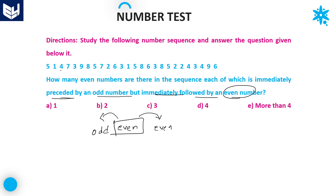Start with the first even number, 4 — preceded by odd but not followed by even, so do not count 4. Next 8 — preceded by odd but not followed by even, cancel this one. Number 2 — preceded by odd and followed by even — you can count this one. Next 6 — preceded by odd? No, cancel. Next even number 8 — preceded by odd and followed by even — yes, count this one. Then 6 — preceded by even, should not count. Next 8 — preceded by odd but followed by odd, not even, so do not count this 8.